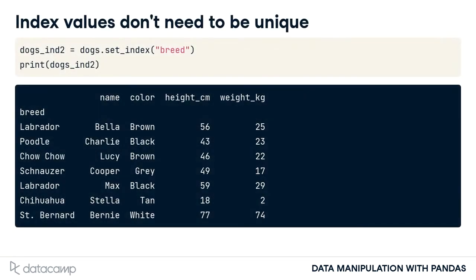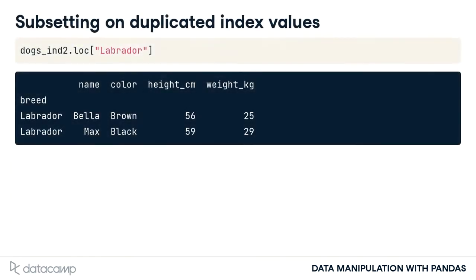The values in the index don't need to be unique. Here there are two Labradors in the index. If you subset on Labrador using .loc, all the Labrador data is returned.